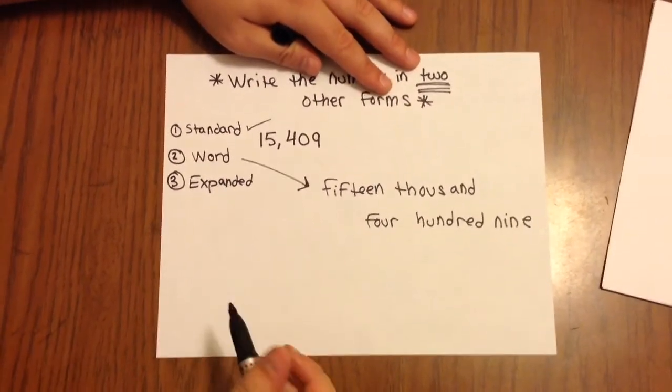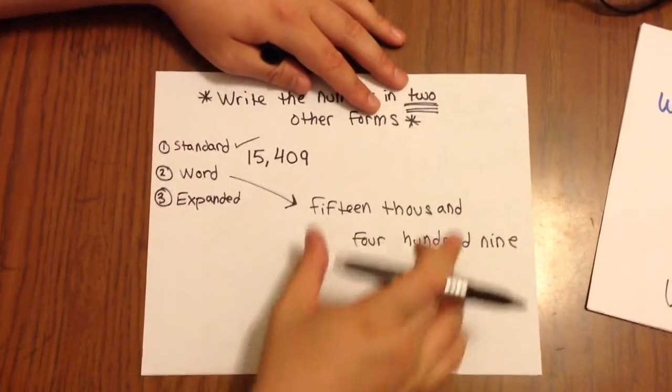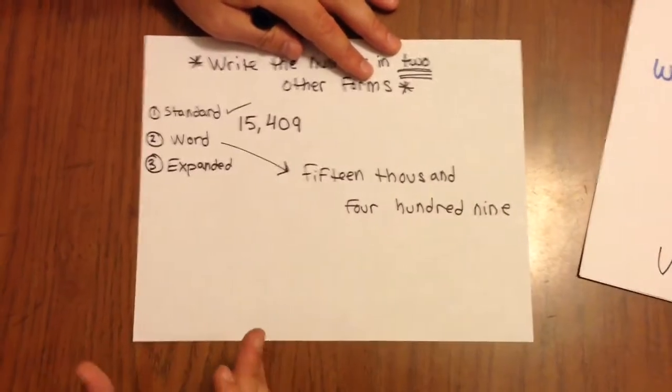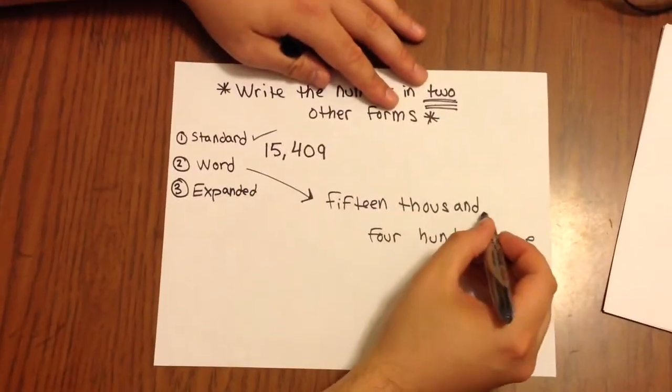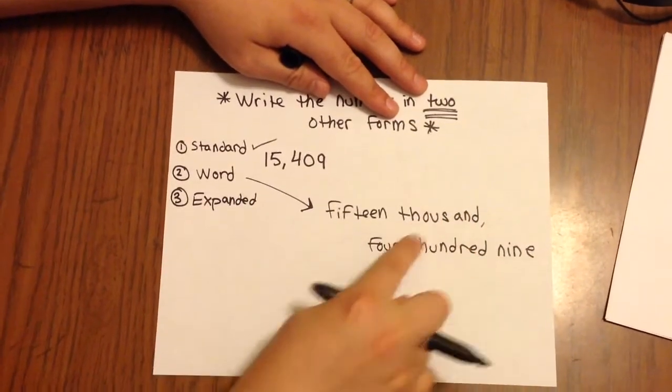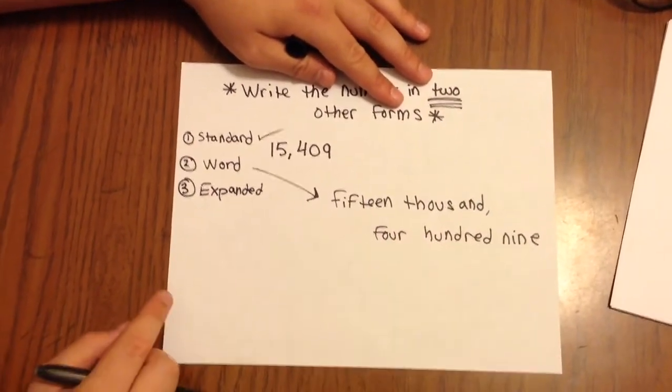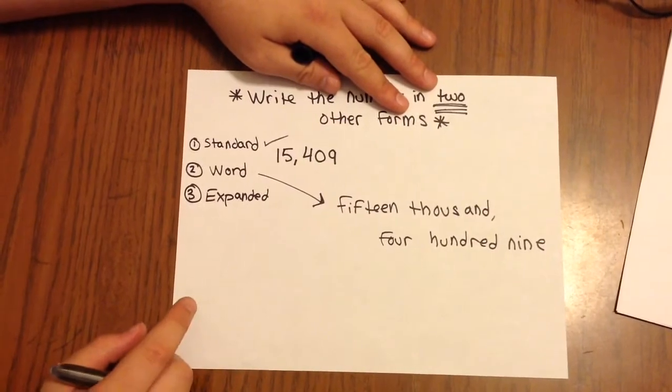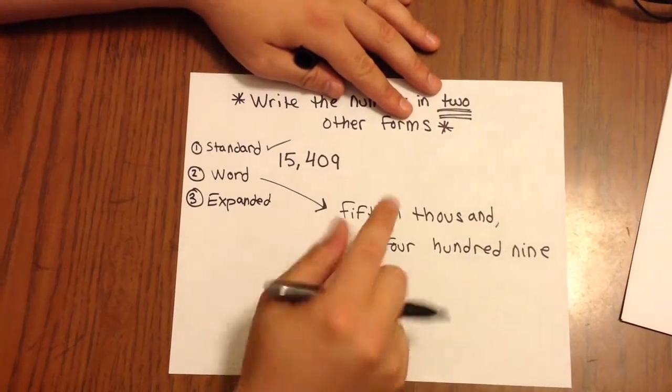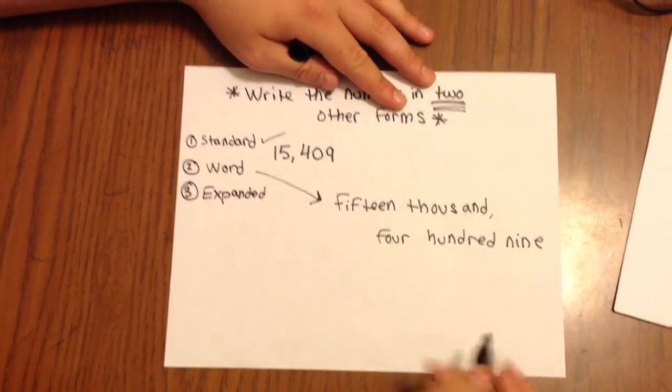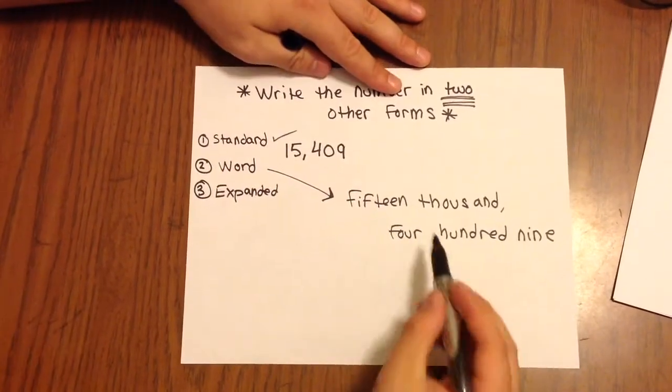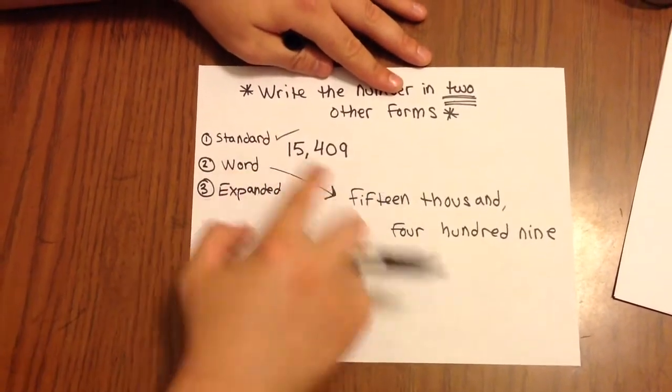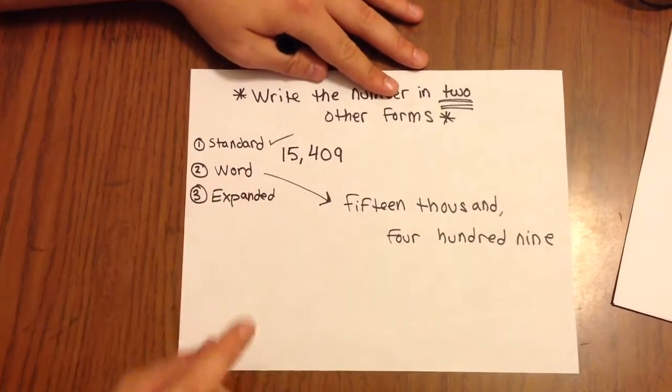If I want to add commas, I'm going to separate this word form into the two periods that this number occupies. So we have the thousands period being separated from the ones period here. And notice I didn't write the word and. We don't say and when we read this number, and we don't write and when we express this number in word form.